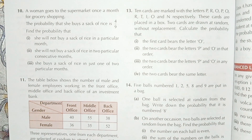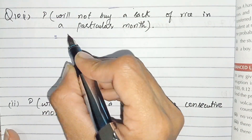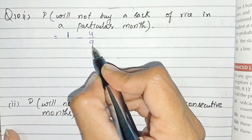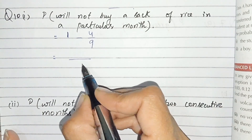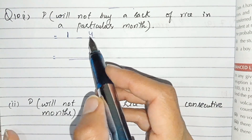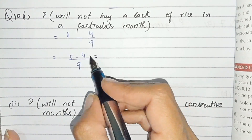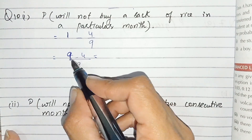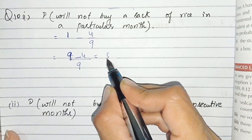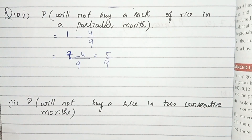P(not buying a sack of rice) = 1 minus 4 over 9 = 9 over 9 minus 4 over 9 = 5 over 9. This is the probability of not buying a sack of rice in a particular month.